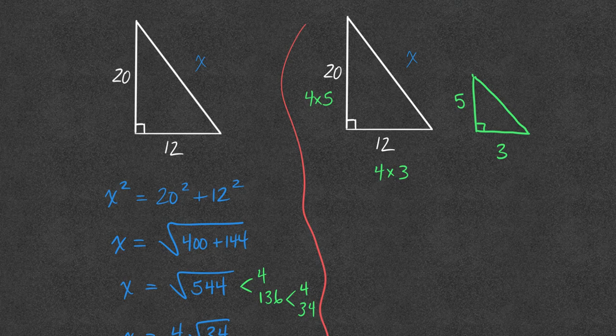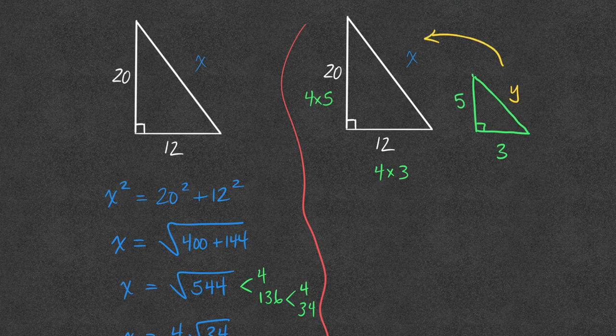So I'm going to now solve for that hypotenuse. I'll just label it as something different so that we don't look back on the diagram and assume both are equal to x. What I can do is I can solve for y on my simpler triangle and then blow it back up using their proportionality.